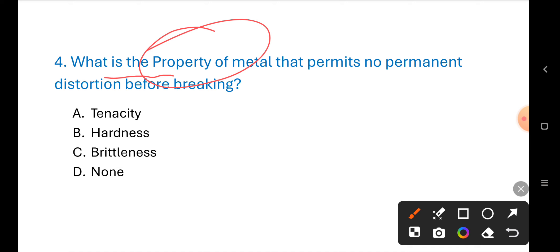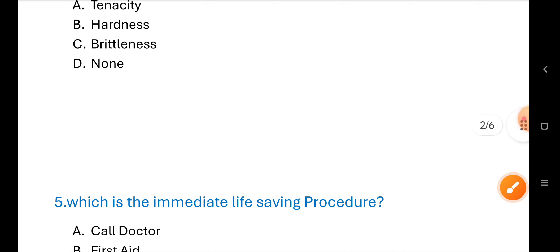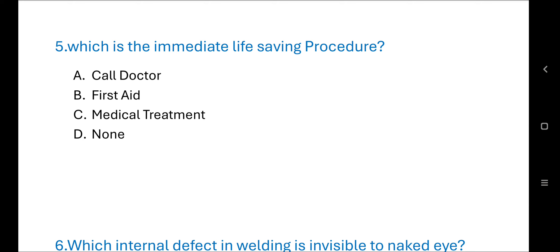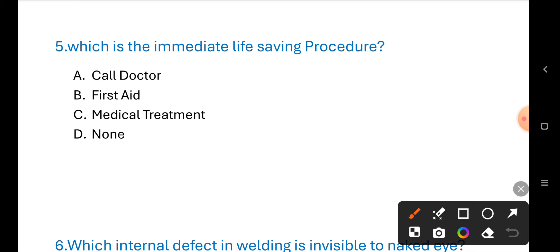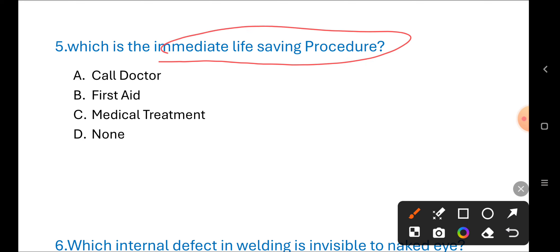Next question: Which is the immediate life-saving procedure? Options are: A) call a doctor, B) first aid, C) medical treatment, D) none of these. The correct answer is B) first aid.